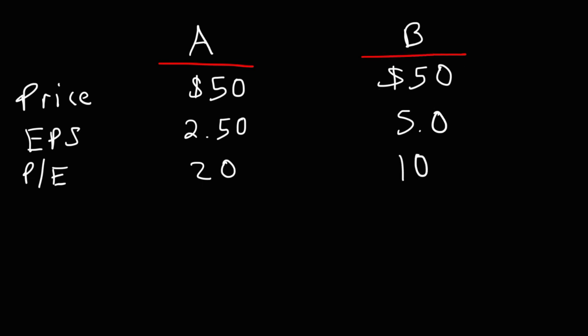Looking at the PE ratios of these two companies, which company would you say is undervalued and which one is overvalued? Company B appears to be undervalued with respect to Company A because it has a lower PE ratio. Company B is trading at 10 times earnings, while Company A is trading at 20 times earnings. So looking at the PE ratio, it appears that Company B is undervalued with respect to A.